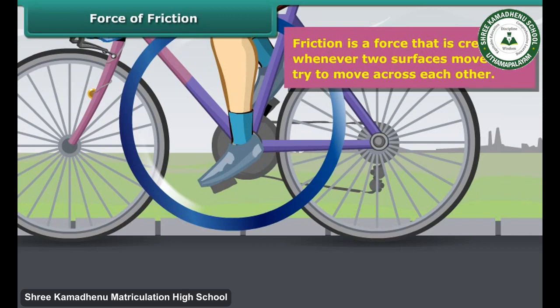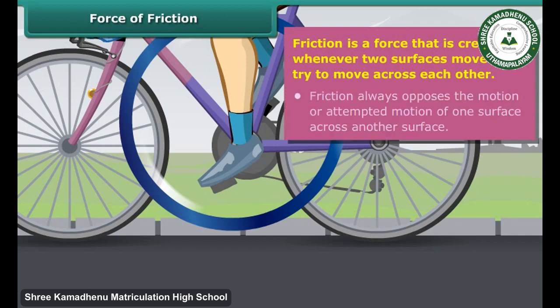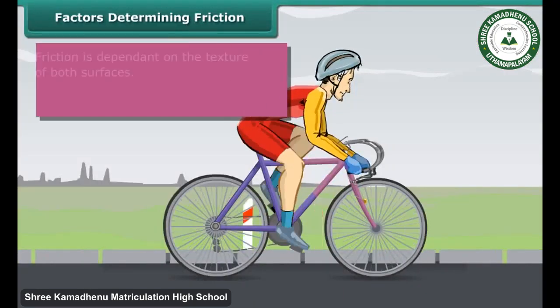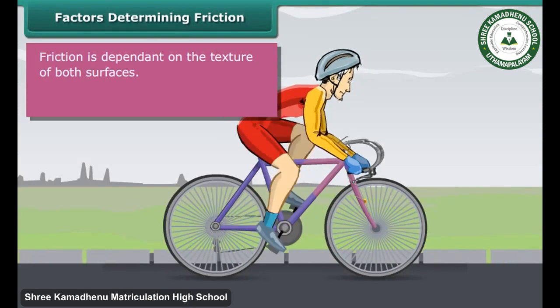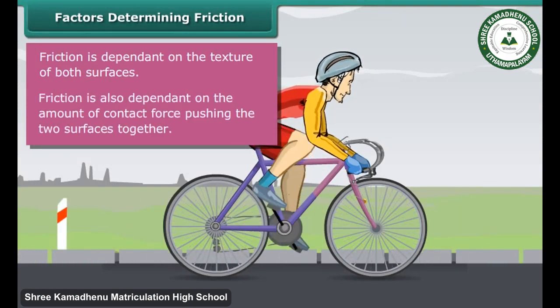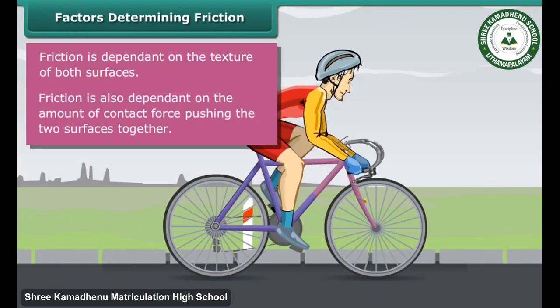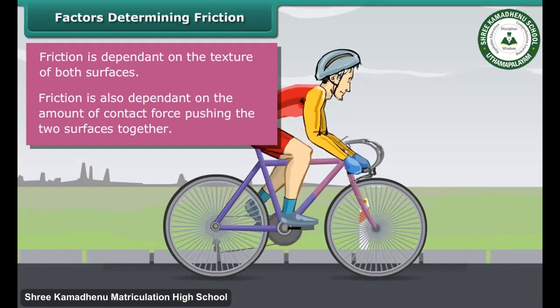Friction is a force that is created whenever two surfaces move or try to move across each other. Friction always opposes the motion or attempted motion of one surface across another. The force which resists the motion of a body while moving on a surface is called friction. Friction is dependent on the texture of both surfaces and also on the amount of contact force pushing the two surfaces together.